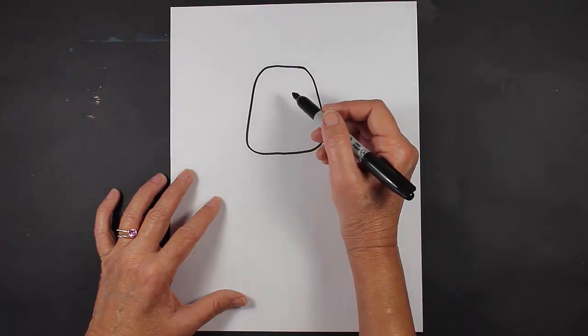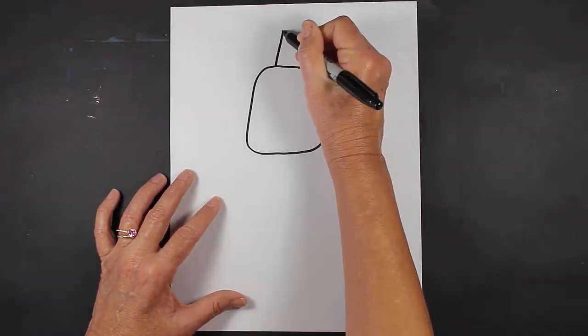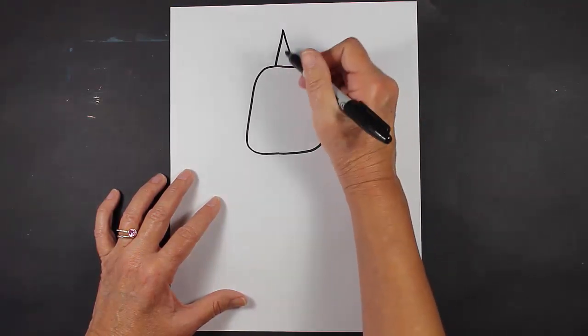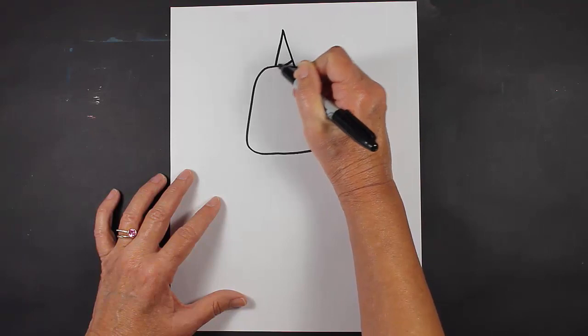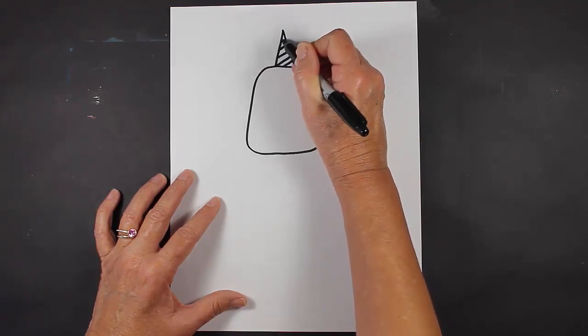Now what we're going to do is make a horn for our unicorn. We're going to make a triangle at the top of his or her head, and inside that triangle we're going to make some slanted diagonal lines.